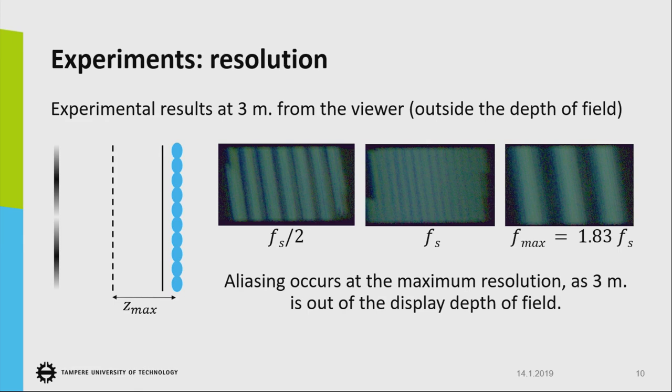When it goes out of this depth of field, around 3 meters for instance, the sampling rate defined at 3 meters can still show the content. But if we go to the maximum resolution of this display at 3 meters, we can see clearly the aliasing. So if you want to show the content at 3 meters, we need to decrease the resolution.